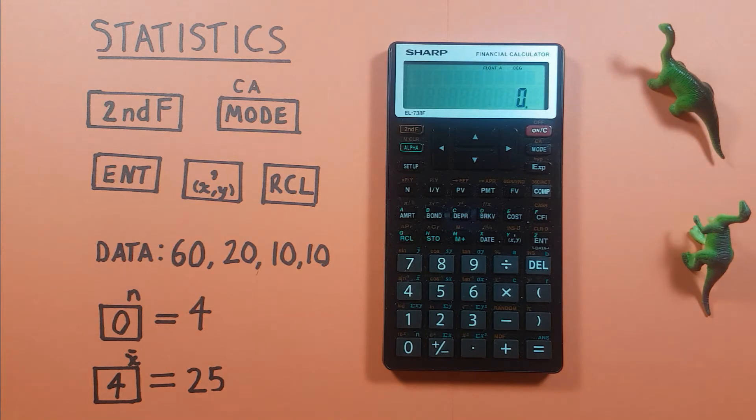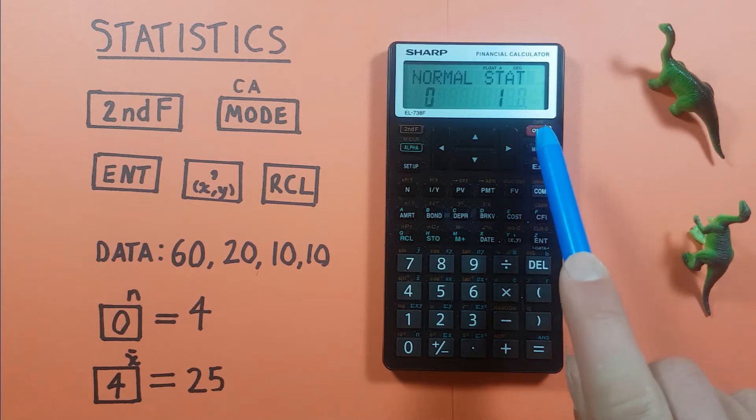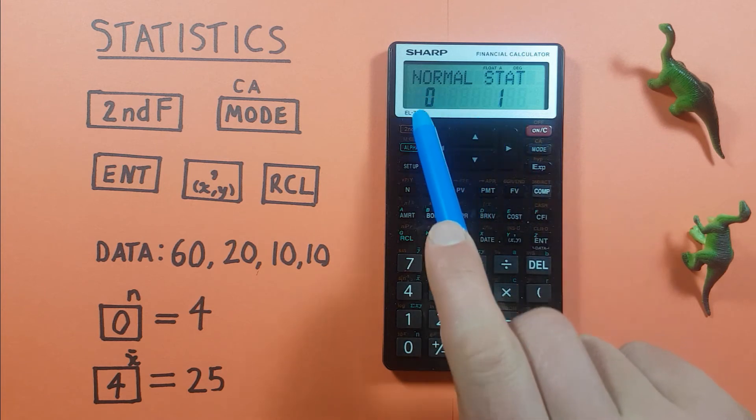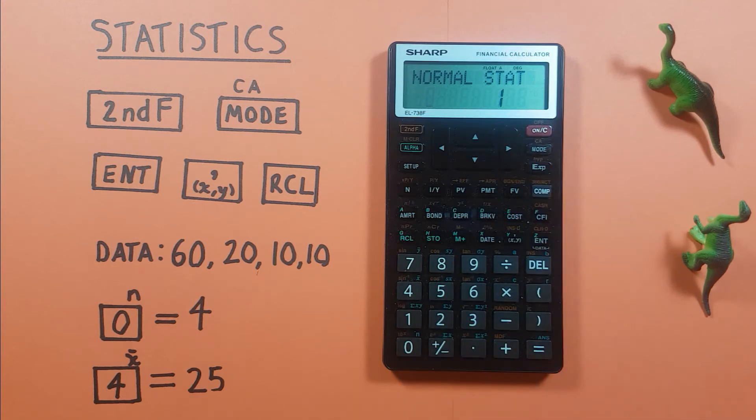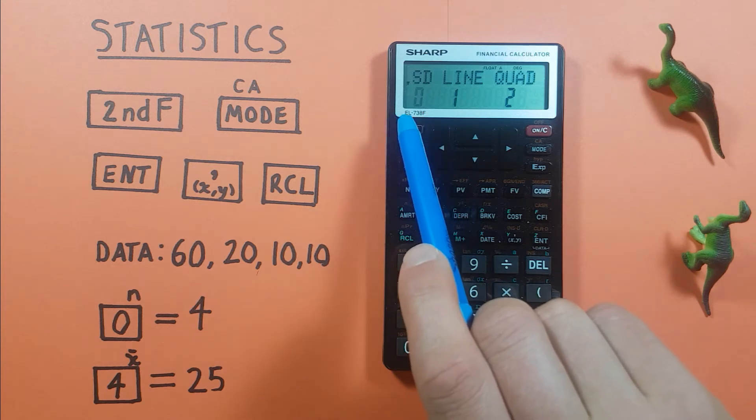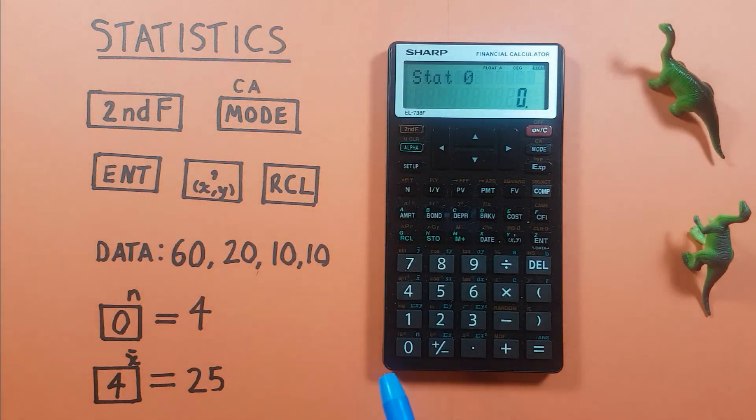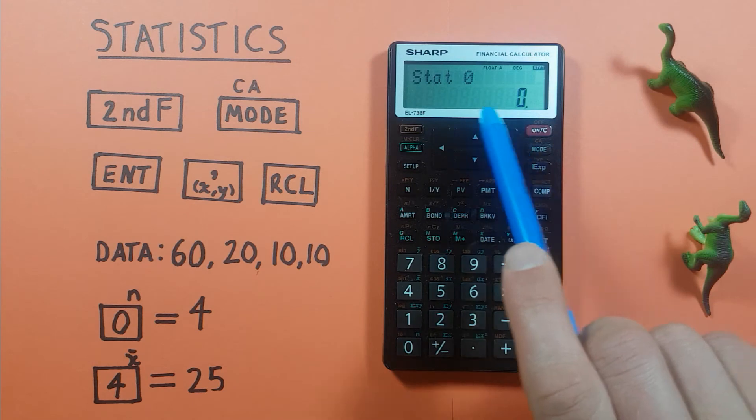So the first thing we want to do is put our calculator into stats mode. To do that we press the mode key and that brings us to this screen here. We get normal 0 or stat 1. Here we choose between our modes and since we want to be in stat mode we press 1 and it'll bring us to this screen and we want 0 for simple stats. So we press 0 and there we go. This is our stats screen.